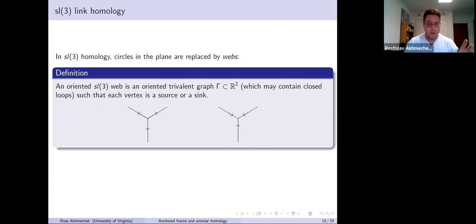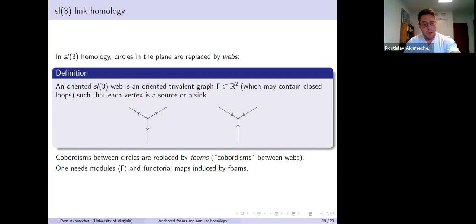There's this condition that each vertex is a source or a sink, so the orientations on the edges are either all outgoing or all incoming at each vertex. These take the place of circles. And what takes the place of cobordisms between circles are the foams. These are cobordisms between webs. Just like in the SL2 setting, we need modules for webs and maps between these modules which are induced by foams. Universal construction provides such modules and maps.